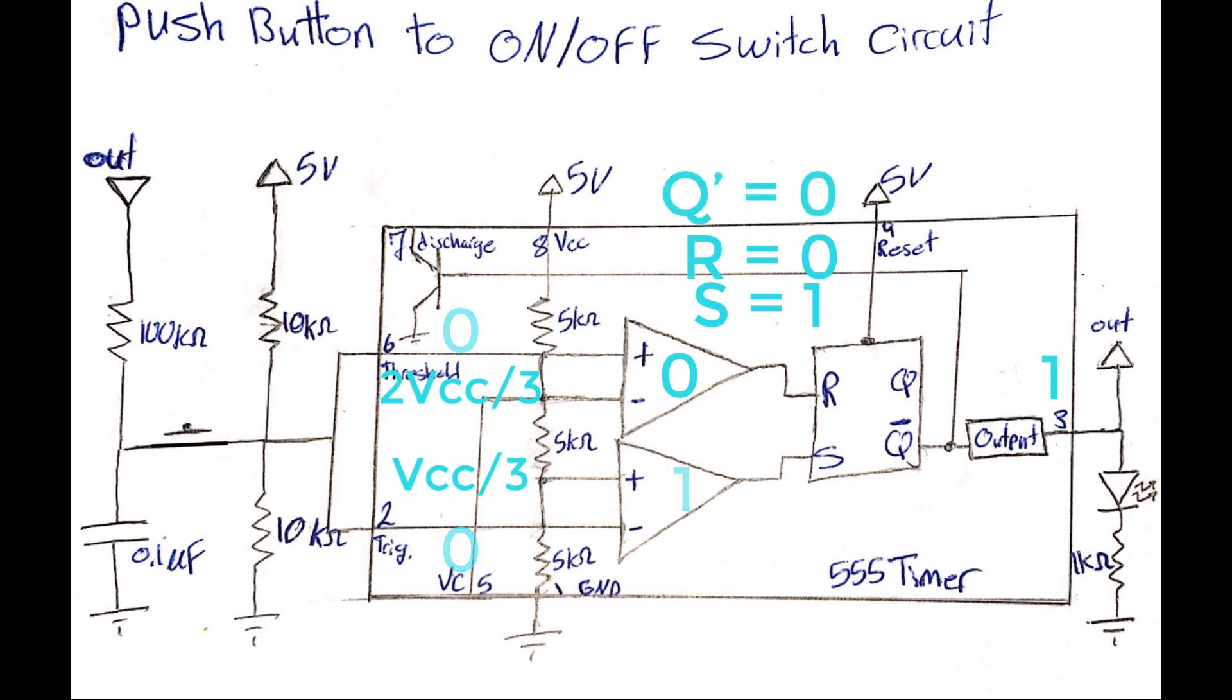At this state, if the push button is kept pressed, the capacitor will be charged to 2.5 volts, which is the voltage of this node. So now the values of S and R are both 0.